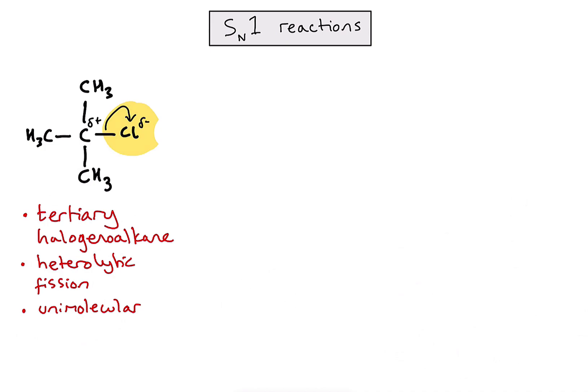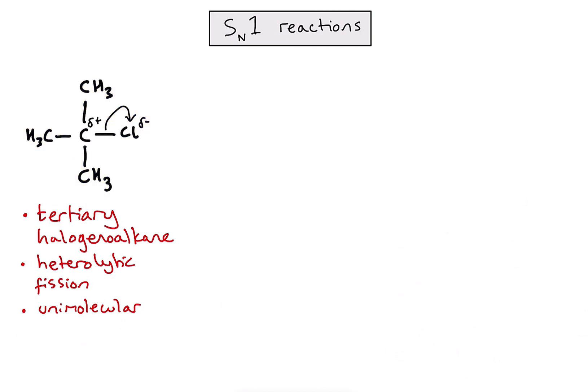Why might this be? It seems quite unusual. Well, if I consider the size of the chlorine and the relatively large methyl groups around the central carbon, their size effectively blocks anything from directly attacking that carbon in the middle. We call this steric hindrance — simply referring to a lack of space for other molecules to attack this molecule.